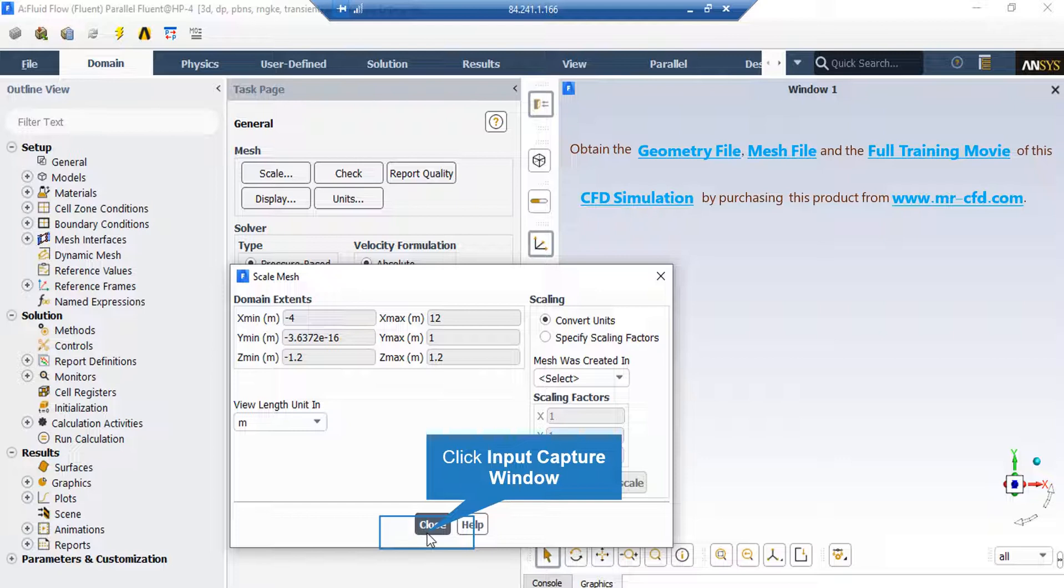Under the scaling section, you can change the settings in order to activate the scaling factors. For example, if your geometry and mesh was designed in software with a default unit of millimeters, by activating these scaling factors you can change this factor to set the length to the appropriate unit.